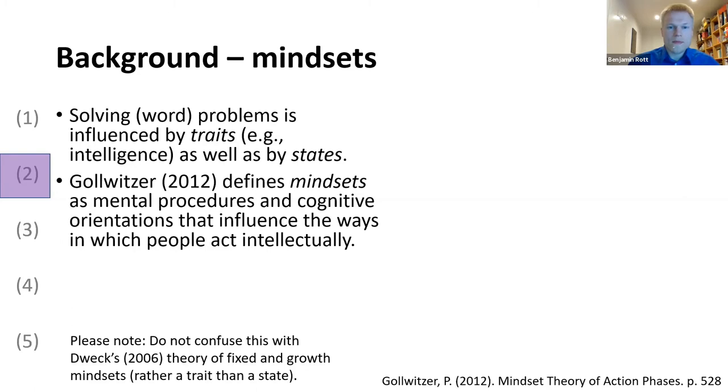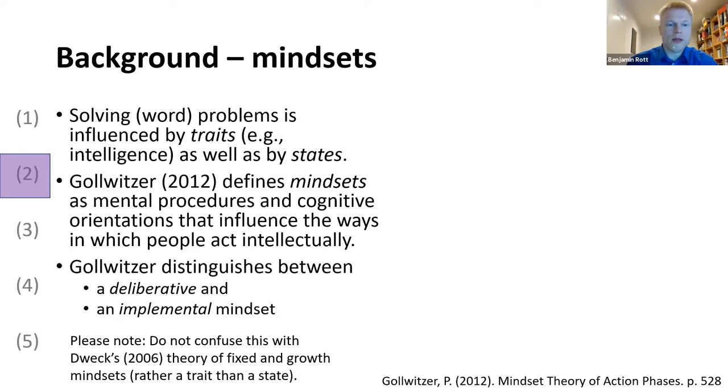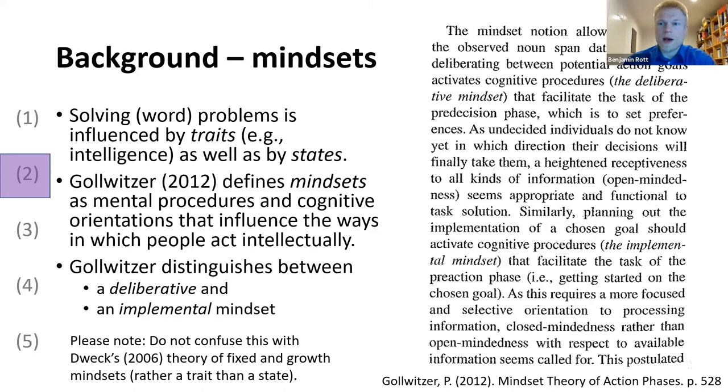And Gollwitzer uses a theory to talk about such states. He defines mindsets as mental procedures and cognitive orientations that influence the ways in which people act intellectually. He distinguishes between two mindsets: deliberative and implemental.